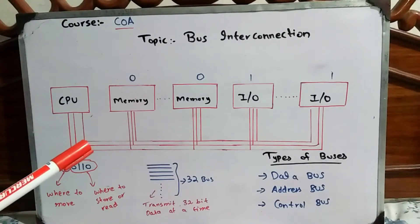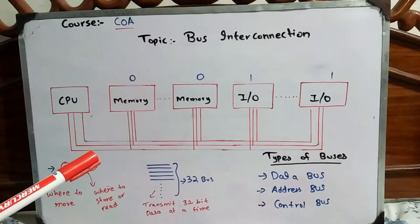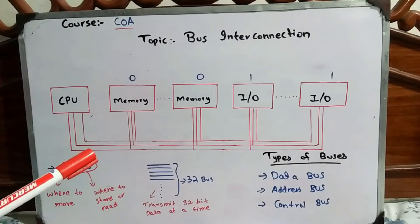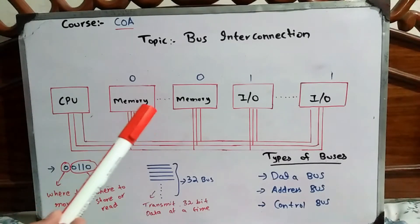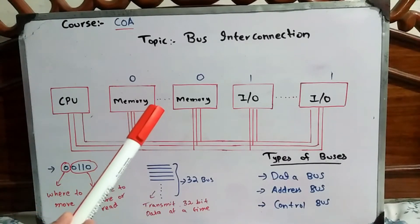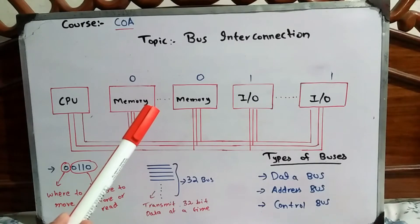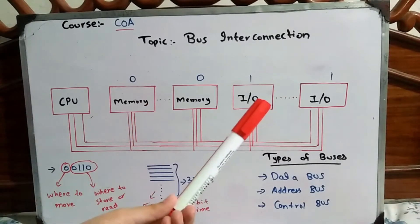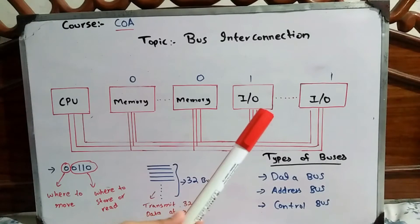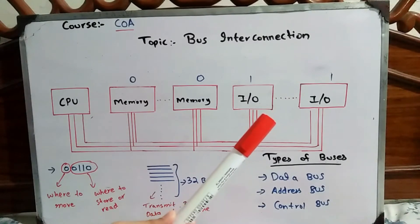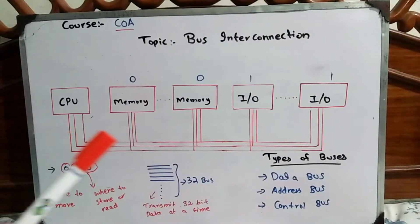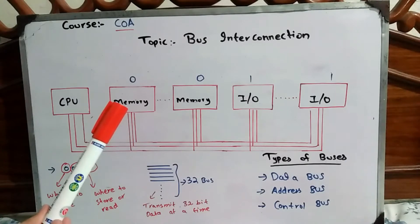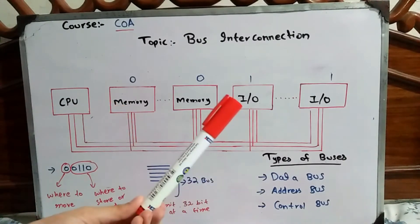First of all, we will discuss the diagram. You can see that there are three buses in a system: 1, 2, and 3. There is one CPU, and there are a number of memories — this dotted line represents that there are multiple memories in the system. There are also a number of I/O devices connected in the system.